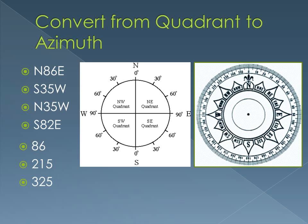Next one: north 35 degrees west. We're at north, and we went about 35 degrees to the west. Since north is 360, we subtract 35 degrees, so we should be at 325.